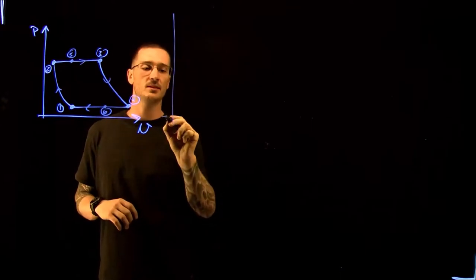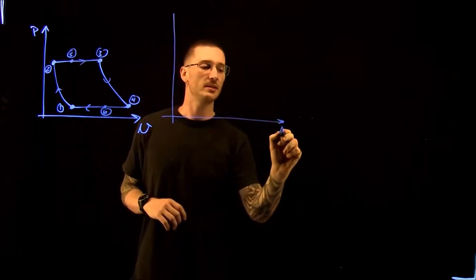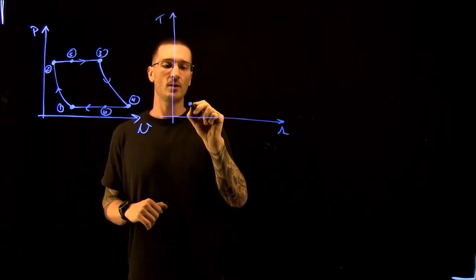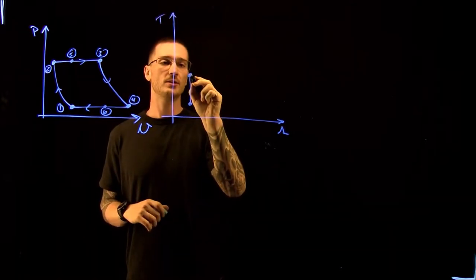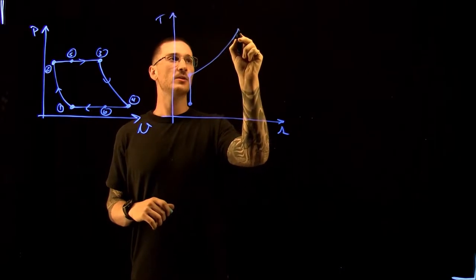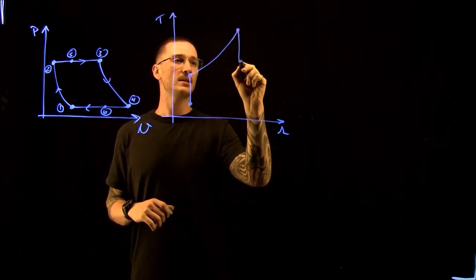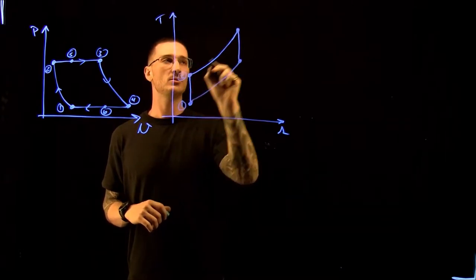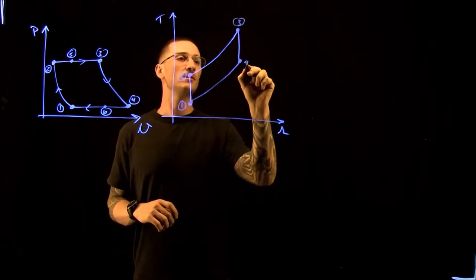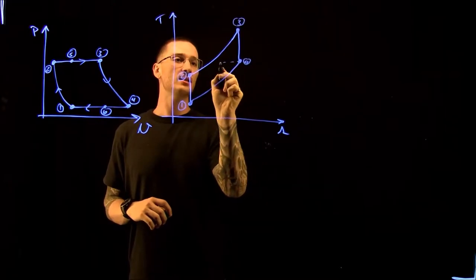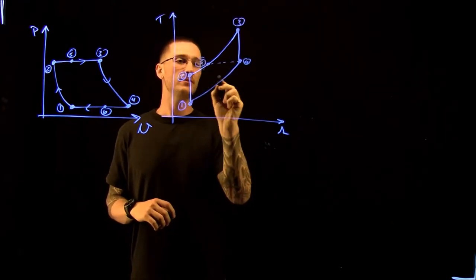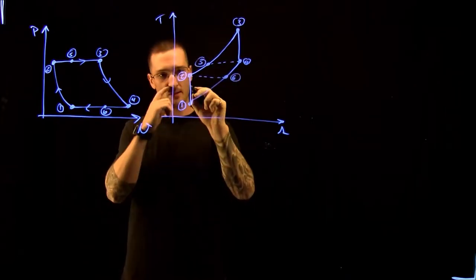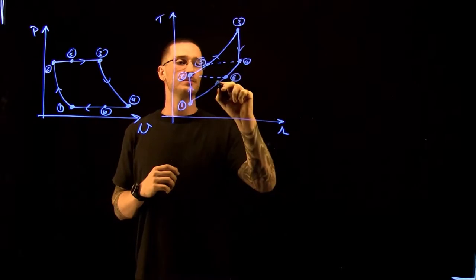On our TS diagram, points 5 and 6 are going to be a bit demystified. We start at point 1, go to point 2, still going to point 3, down to point 4, and then back to 1. So this would be 1, 2, 3, 4. Point 5 is here and point 6 is here, and we're still flowing in this direction.